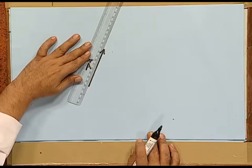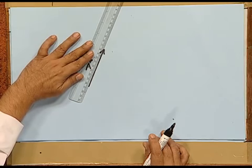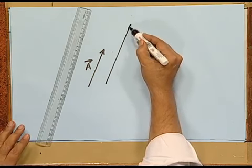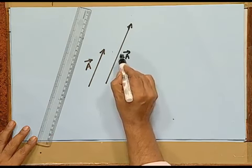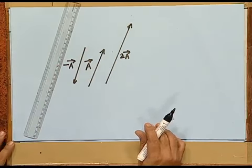Consider vector a as shown. What is meant by two times this vector? Two is a scalar. Two a — doubling this vector means the magnitude will be doubled and the direction remains the same. Two a is the same vector having double the magnitude. This is the multiplication of a scalar with a vector. What do you mean by minus a? Multiplying a vector by negative one gives minus a. These two vectors have the same magnitude but their directions are opposite to each other.